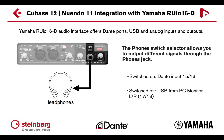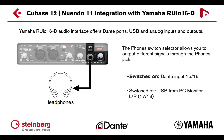The phone switch selector allows you to output different signals through the phone jack. Switch on: Dante input channels 15 and 16. Switch off: USB from PC monitor left and right, or channels 17 and 18.